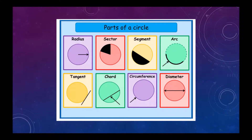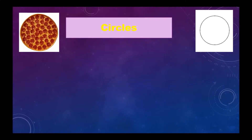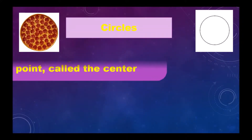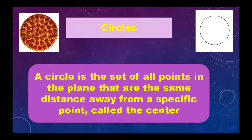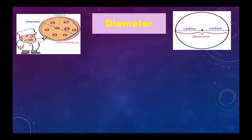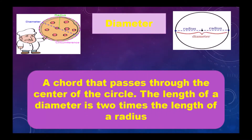First of all, a circle is the set of all points in the plane that are the same distance away from a specific point called the center. Diameter: a chord that passes through the center of the circle.